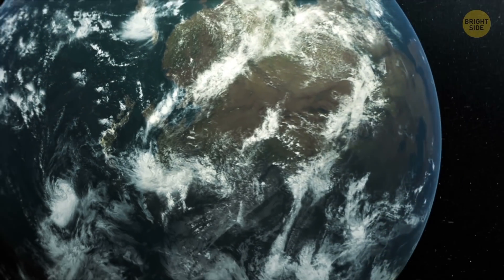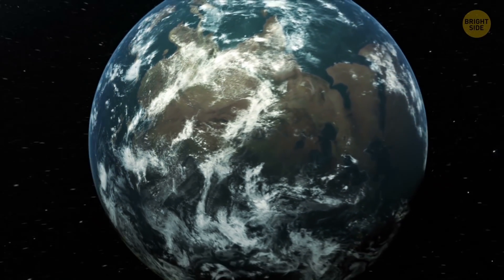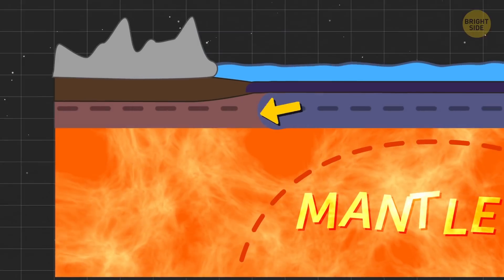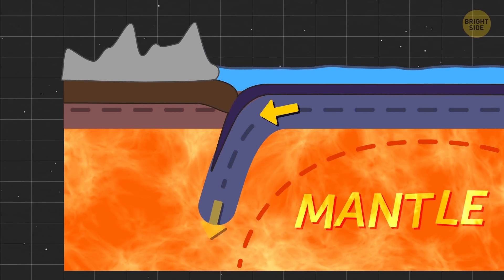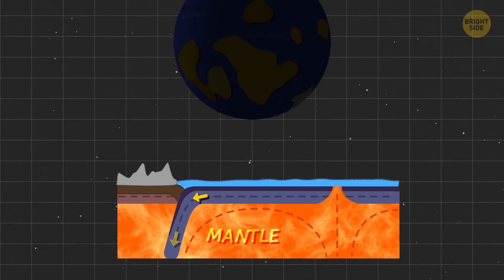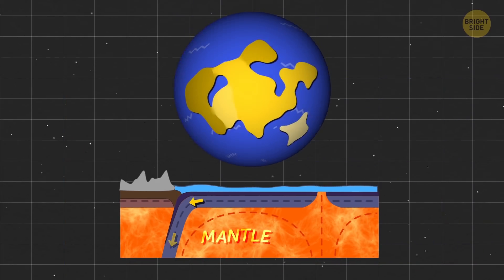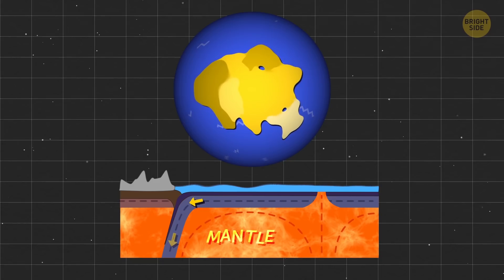Now that we got the gist of what subduction zones are, let's get back into the juicy methods the Earth uses to make things disappear. During the introversion method, the oceanic crust dives back into the Earth's hot mantle. The inner ocean sinks back into the Earth's interior, and then the continents reconnect again.